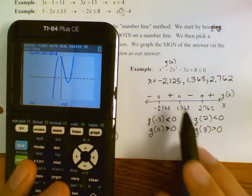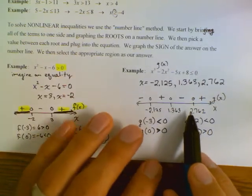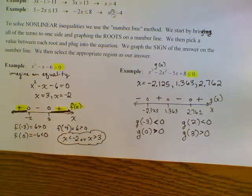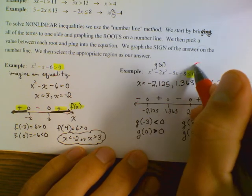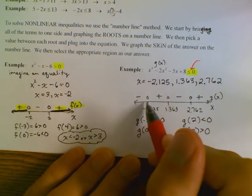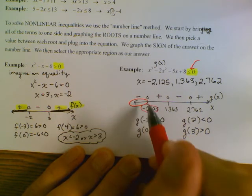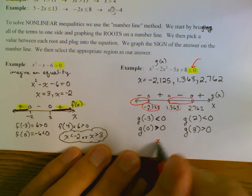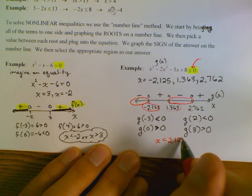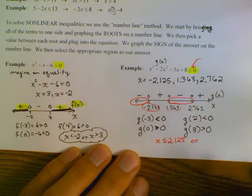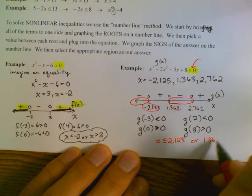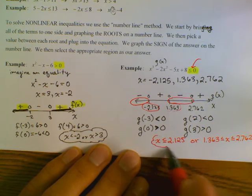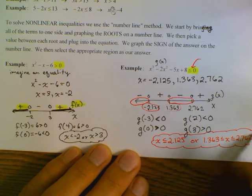I really want to encourage you to start using these number lines as soon as possible in calculus — it's a great teaching strategy. We want the answers where g(x) is less than or equal to zero, so that includes x less than or equal to negative 2.125, or x between 1.363 and 2.762 inclusive. That is the final answer.